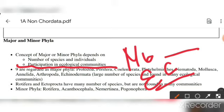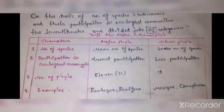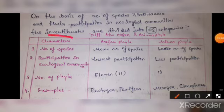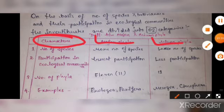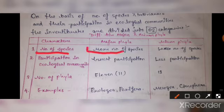Here I have differentiated both the phyla. The first character is the number of species: in major phyla, the number of species is more, while in minor phyla, the number of species is less.